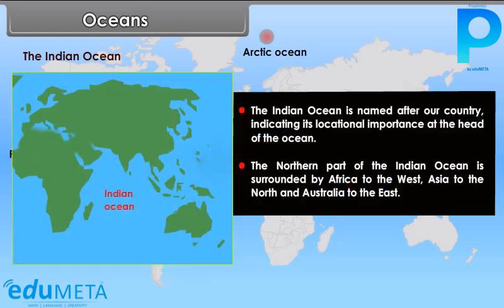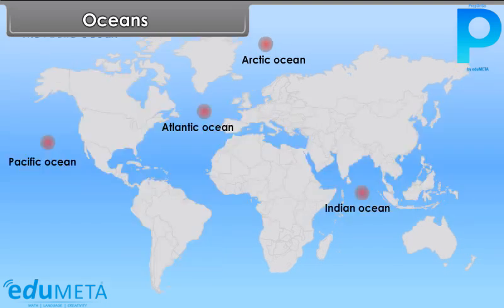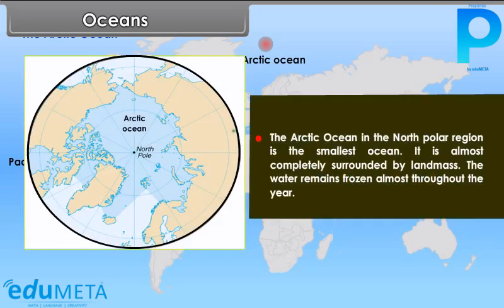The Indian Ocean is named after our country, indicating its locational importance at the head of the ocean. The northern part of the Indian Ocean is surrounded by Africa to the west, Asia to the north, and Australia to the east. The Arctic Ocean in the North Polar region is the smallest ocean. It is almost completely surrounded by land mass, and the water remains frozen almost throughout the year.